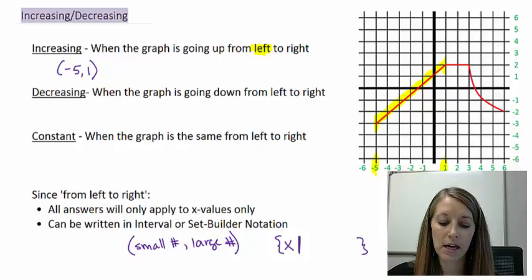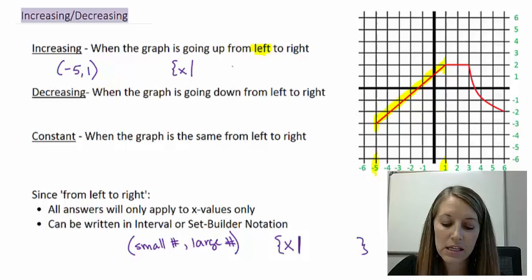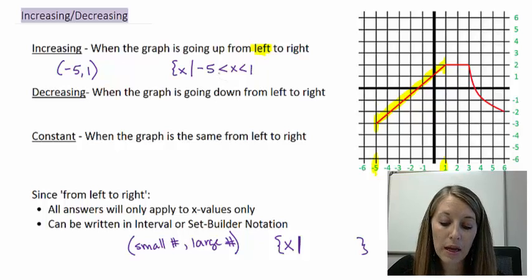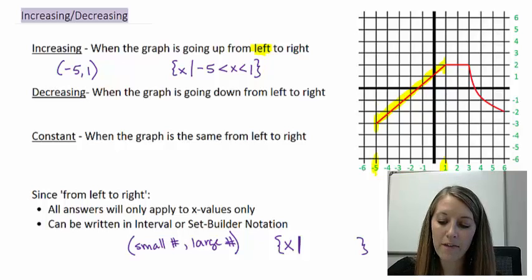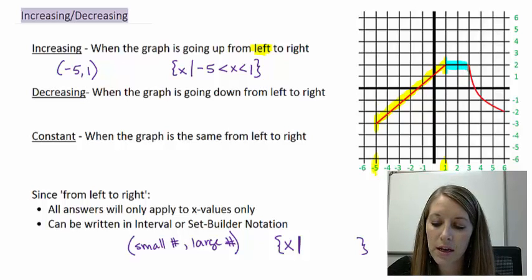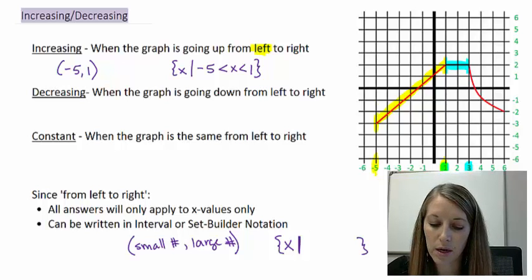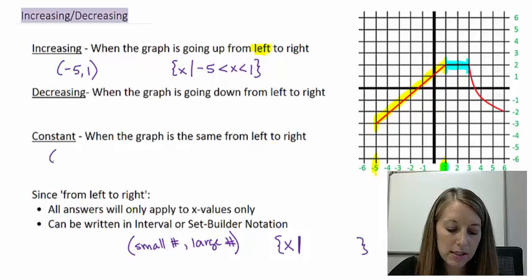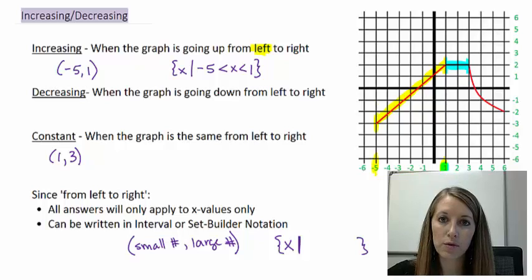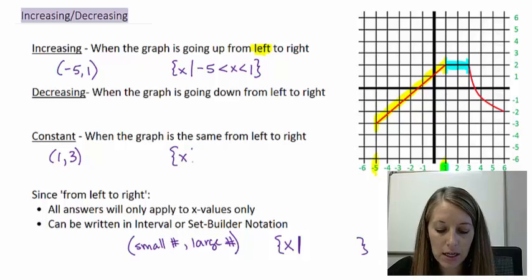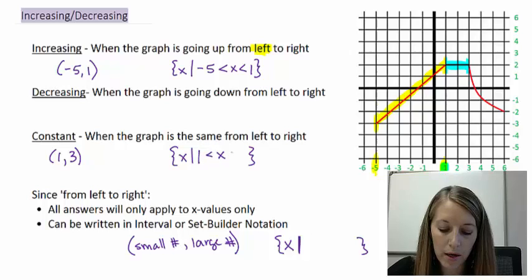In set builder notation, the increasing interval is the set of X's such that X is between negative 5 and 1, with strict inequalities. Moving on, starting at x equals 1, the graph is not moving — it's going straight horizontal, so it's constant. It stops being constant at x equals 3. So the constant interval is from 1 to 3, written as (1, 3) in interval notation, or the set of X's such that X is between 1 and 3.